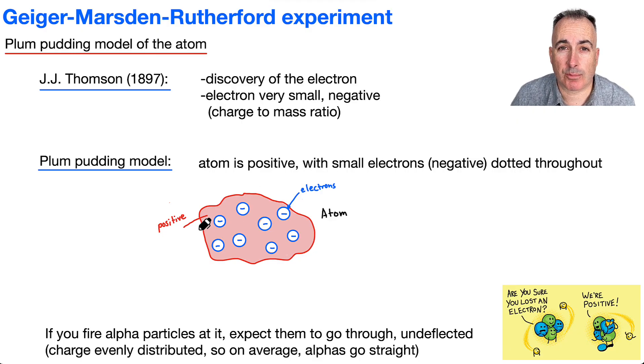First, it's important to learn the plum pudding model of the atom. This is what they thought the atom was actually made of. It's not so ridiculous because people were just trying to find this out through experiments. For example, J.J. Thompson in 1897 worked with the discovery of the electron. They figured out the electron is very small and negative, and they figured out the charge to mass ratio of the electron.